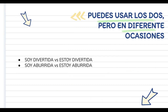But one thing that is tricky is that puedes usar los dos, pero en diferentes ocasiones. What this means is that you can use both, but the meaning will be different. Seeing the example that I have here, you can both say soy divertida and estoy divertida, or soy aburrida and estoy aburrida. Soy divertida is one characteristic that you have as a personality, but estoy divertida is having fun in one particular moment. Similarly, soy aburrida describes yourself as a boring person, while estoy aburrida is a feeling of being bored.